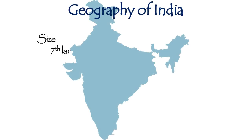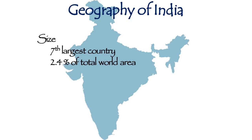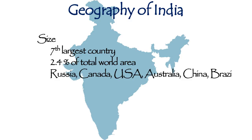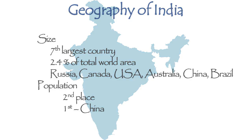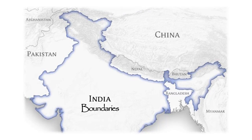India is the seventh largest country in the world. It occupies a total of 2.4 percent of the total world area. The other six countries larger than India are Russia, Canada, USA, Australia, China, and Brazil. In terms of population, India occupies second place, with China in first place.